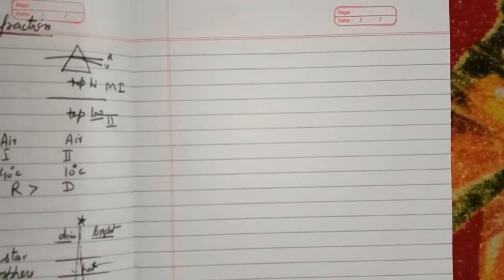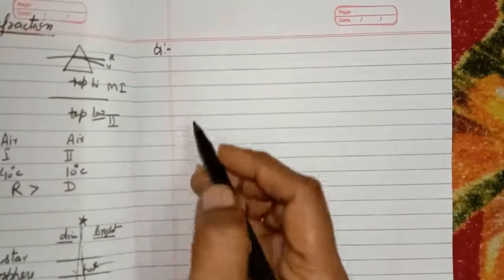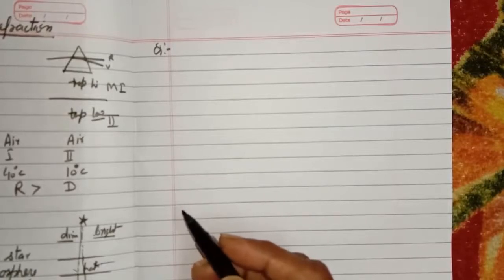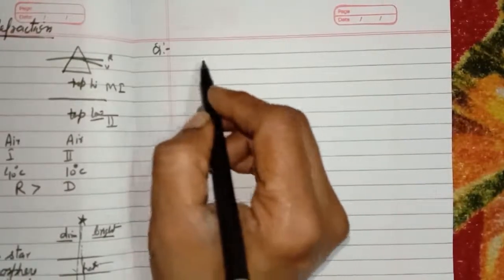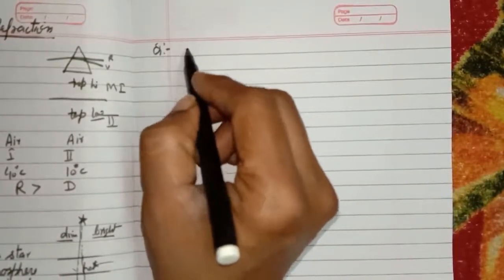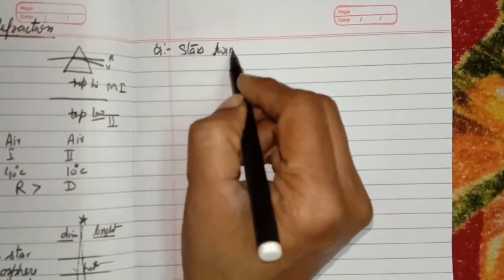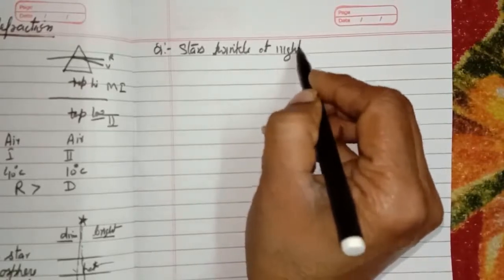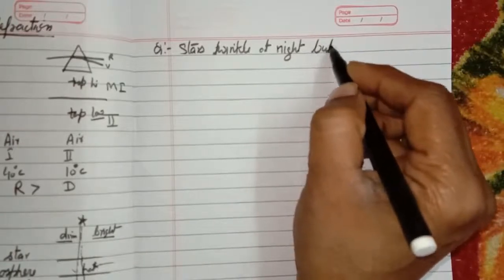Now we will understand why stars twinkle but planets do not. The stars at night twinkle but planets do not — explain. The distance of stars from the earth is so large that stars appear to be like a dot, like a point source of light. Planets in our solar system are much closer to us compared to stars.